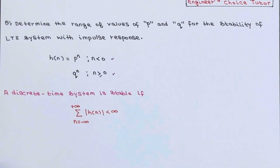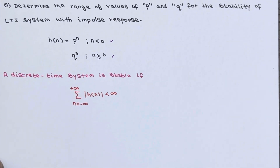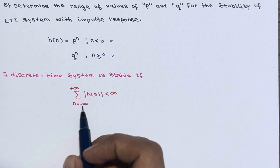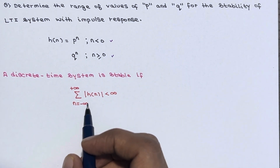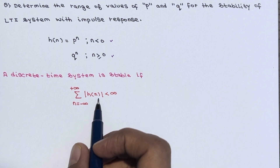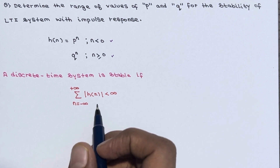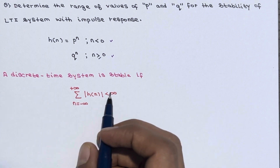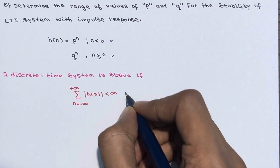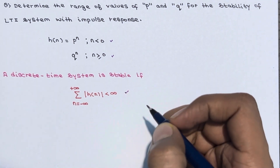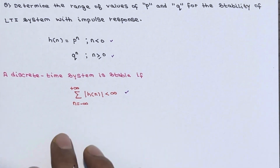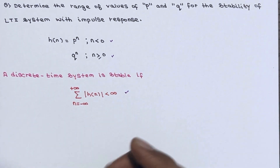A discrete time system is stable if the summation of the absolute value of H(n), over the limit ranging from n equal to minus infinity to plus infinity, is smaller than infinity. We already know this. Now let's calculate this.